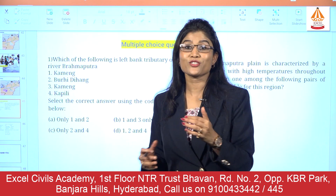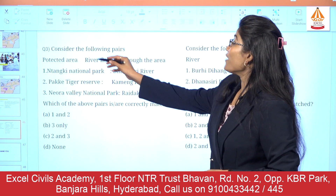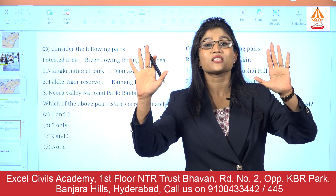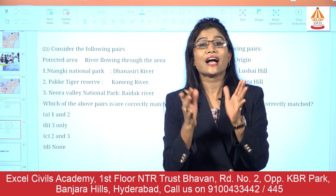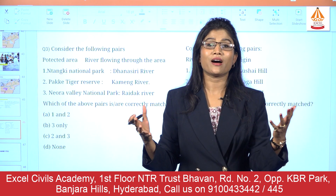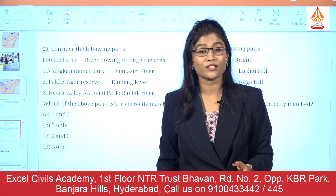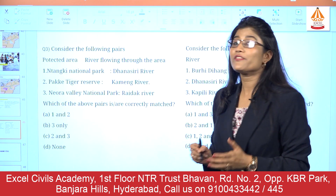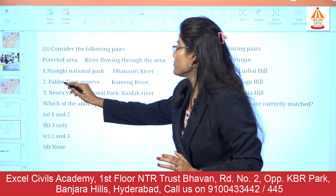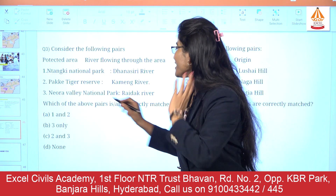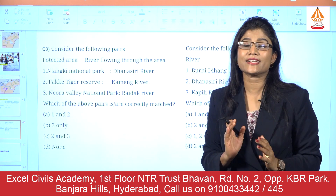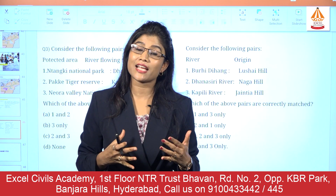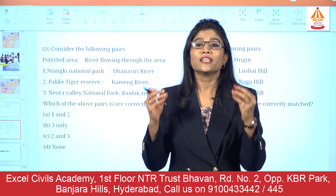The third question: consider the following pairs — protected areas paired with the river associated with that protected area. The first pairing is Intanki National Park with the Dhaneseri river; the second is Pakke Tiger Reserve with the Kameng river; and the third is Neora Valley National Park with the Raidak river. This is a very interesting question and nowadays UPSC is asking such questions where both your understanding and memory are tested.